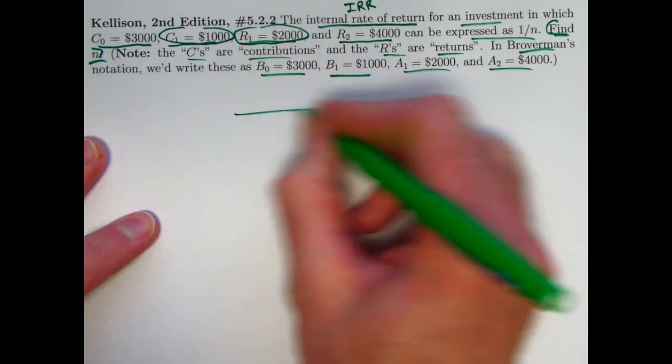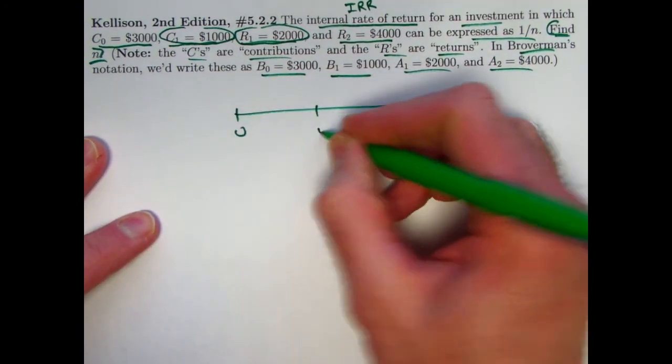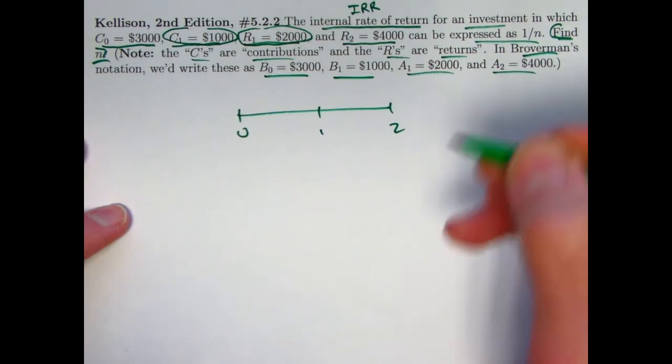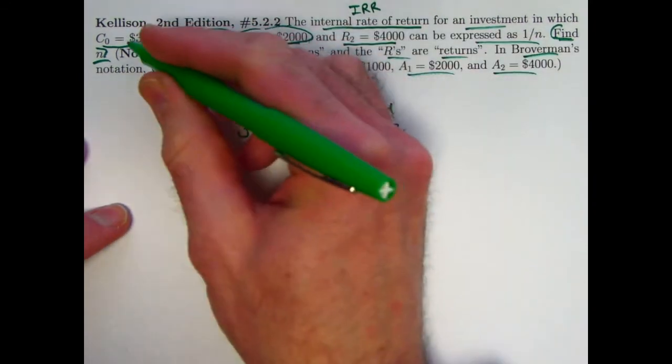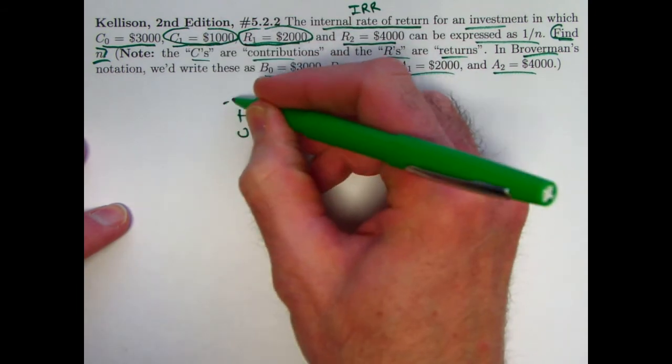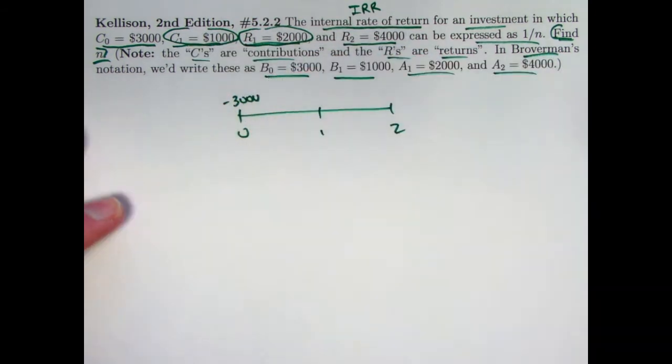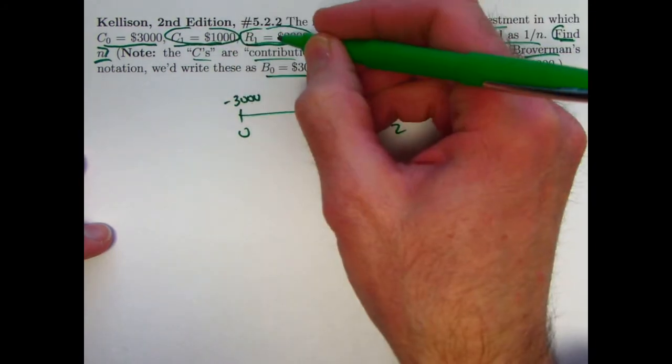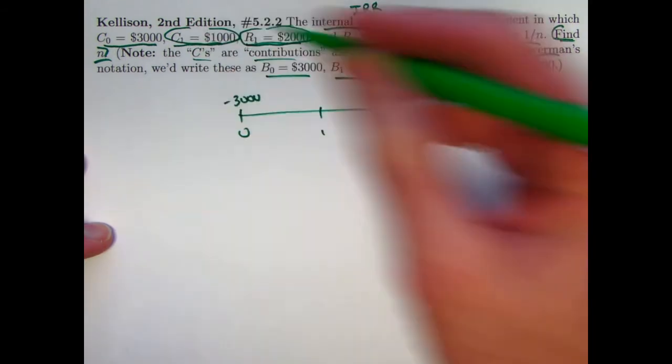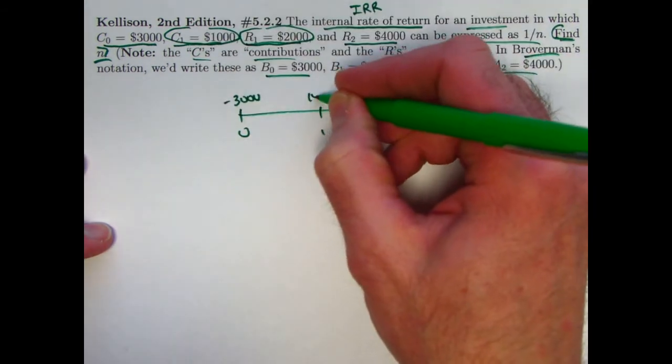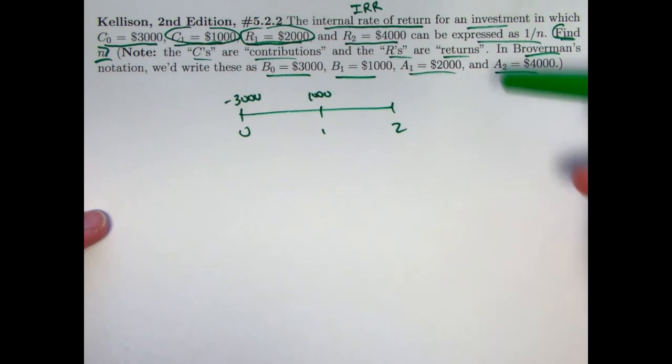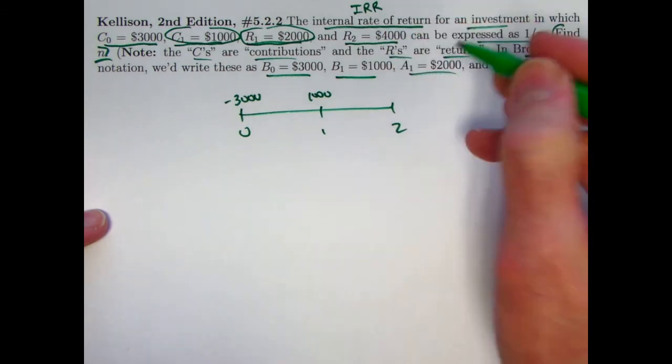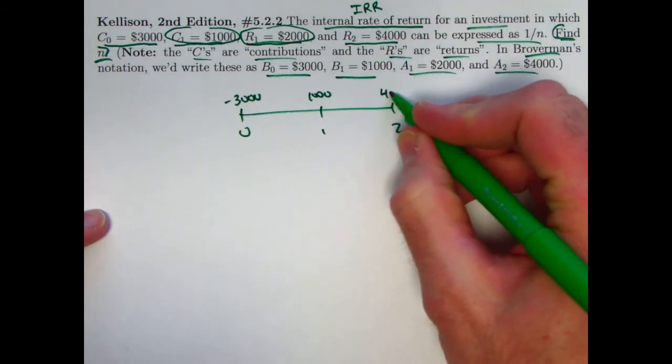So let's just quickly draw a number line and quickly solve this problem. We'll end up using the quadratic formula. C zero is at time zero, and you think of it as negative for the purposes of an equation of value. Negative 3,000. Both C1 and R1 are at time one. You would do R1 minus C1 to get 1,000 as the value at time one. With Broverman's notation, you do A1 minus B1. Still 2,000 minus 1,000. And at time two, you have 4,000 minus zero. That would be 4,000.